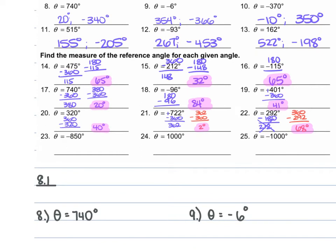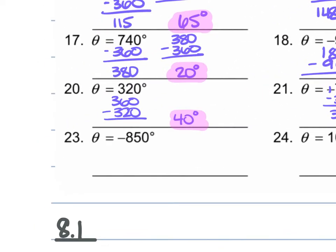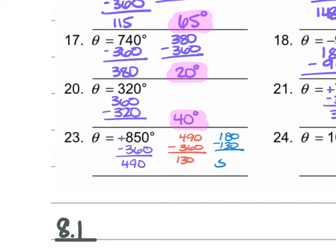For number 23, theta is negative 850 degrees. We turn this into a positive and subtract 360: 850 minus 360 gives us 490. That 490 is not less than 360, so we subtract 360 again and get 130. That 130 is not an acute angle, so we subtract 130 from 180 and we're left with 50 degrees — our reference angle.